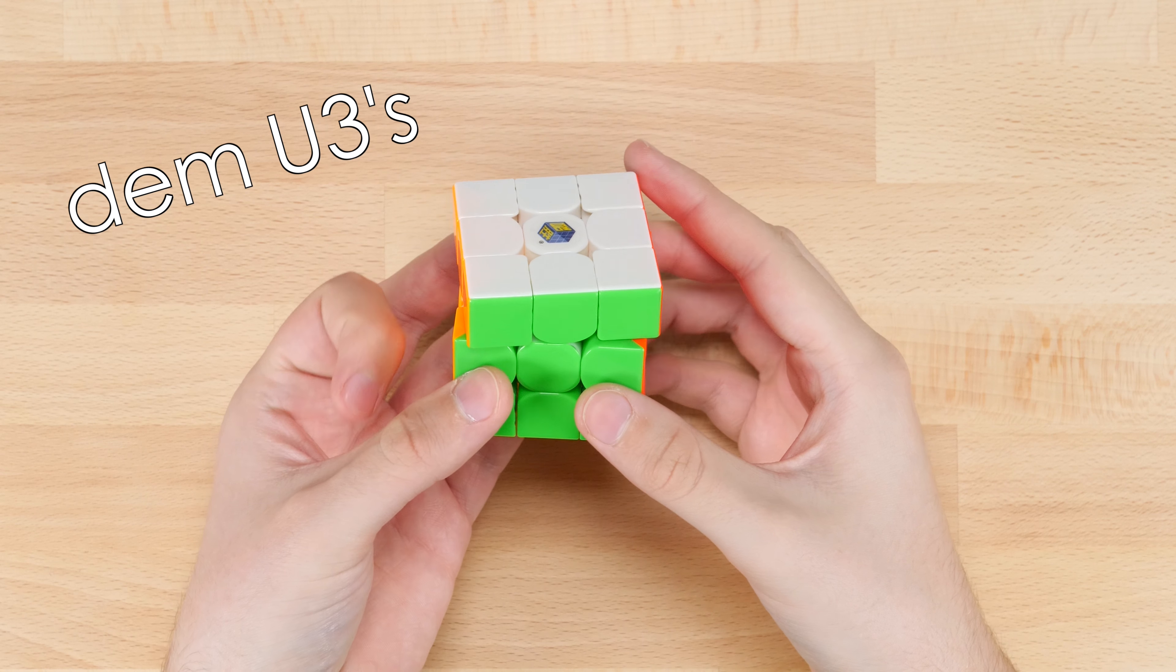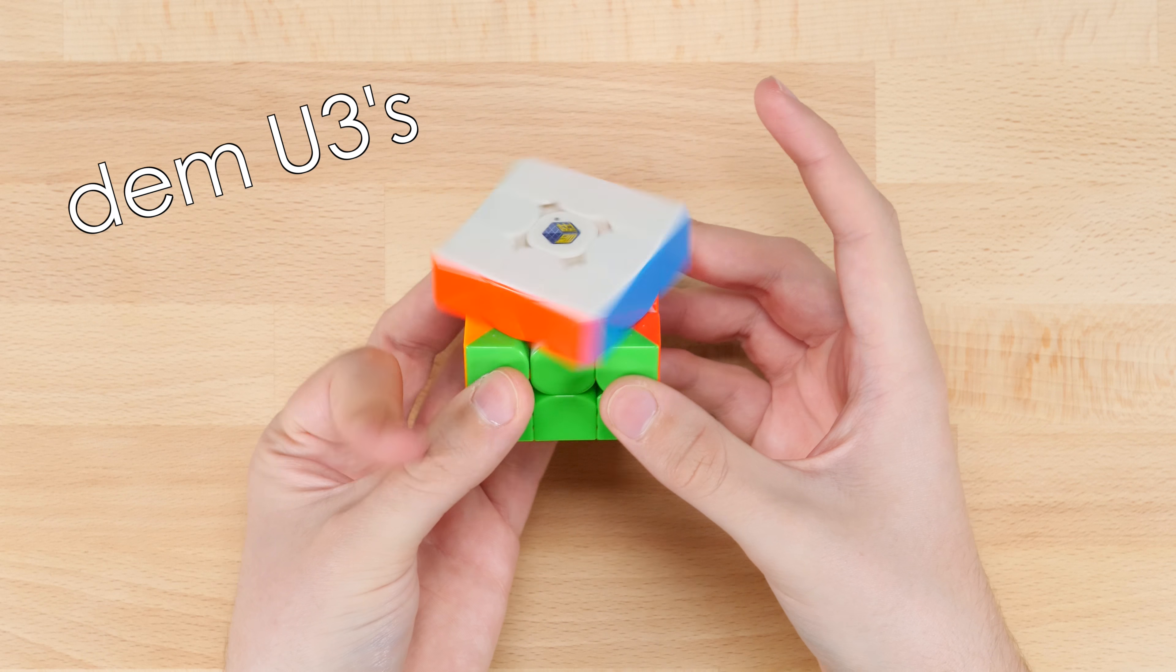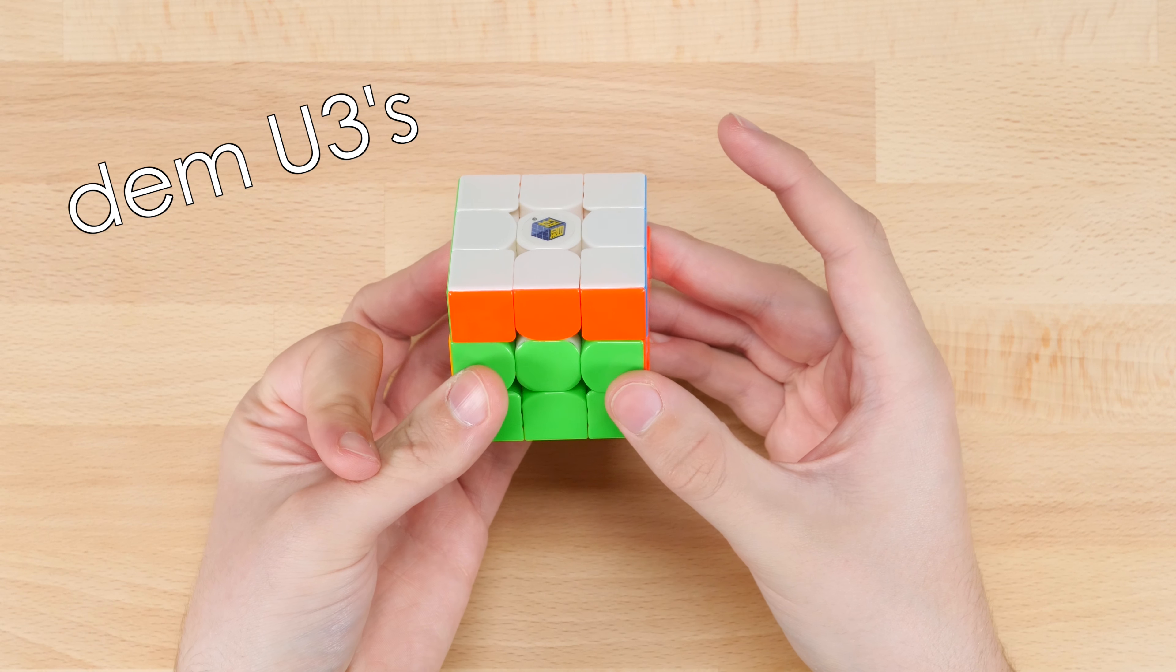It definitely does put some more momentum on the outside of the cube though so it can cause overshooting. So if you get this cube and you do think it's a little bit too uncontrollable you might consider removing the ball bearings. I've decided to leave mine in however because I do think it provides a pretty unique feel.